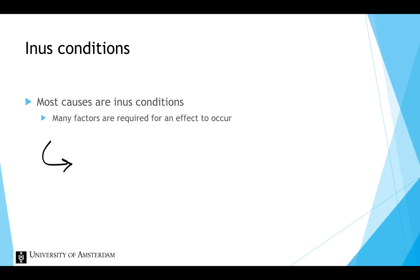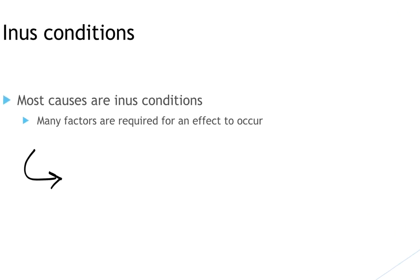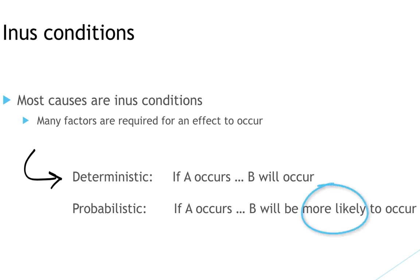This is one of the important reasons that the causal relationships we discuss during this course are not deterministic—so if A occurs, B will occur—but probabilistic. The presence of a cause increases the probability of the occurrence of an effect. So if A occurs, B is more likely to occur.